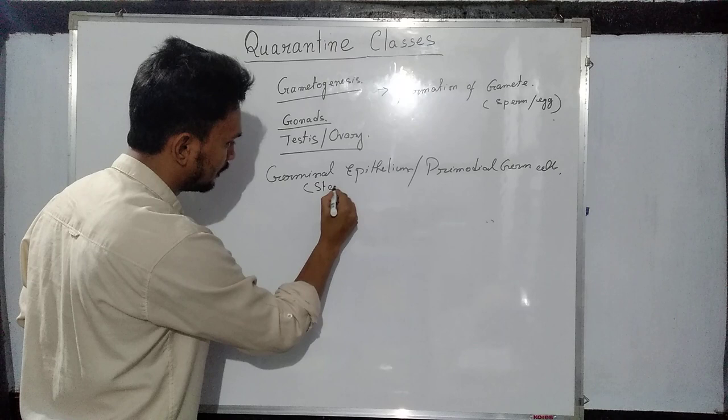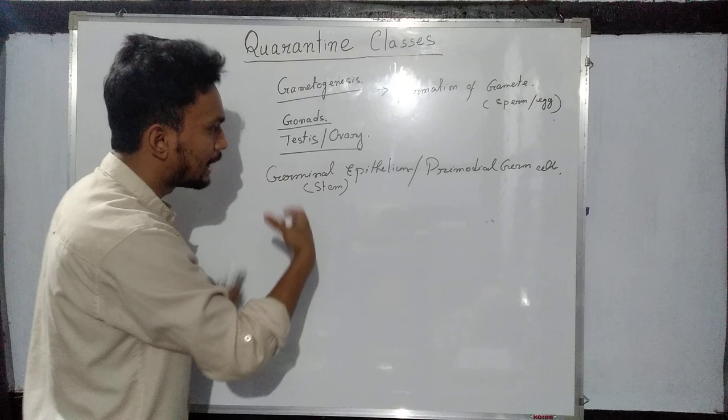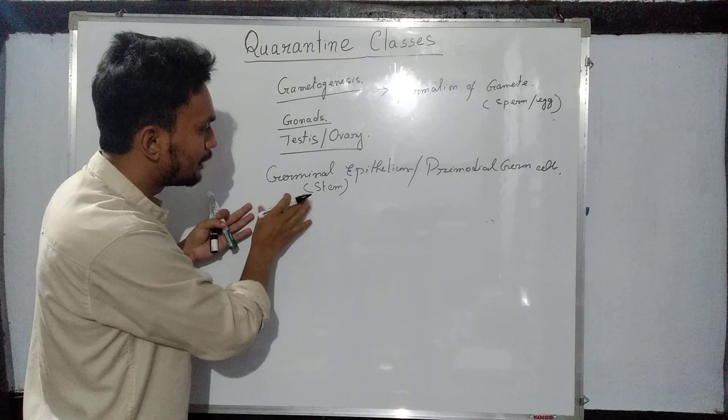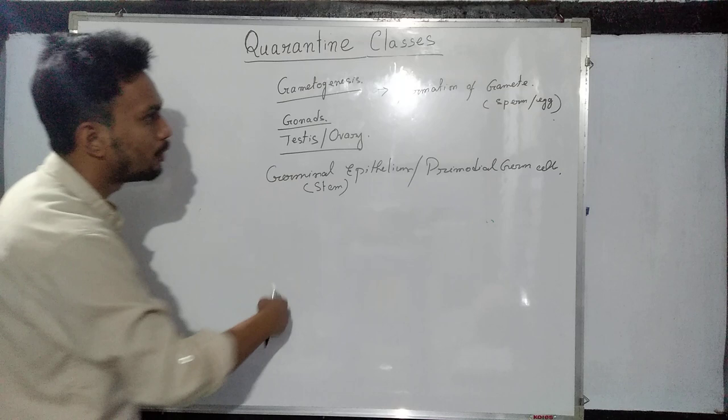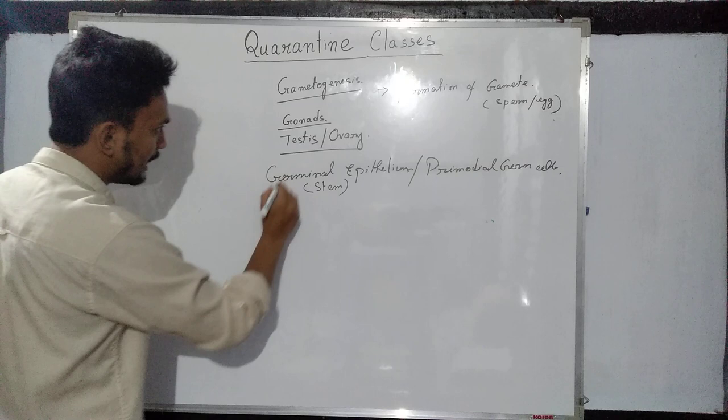These are also termed as primordial germ cells. Remember, these are a special kind of cells — they are a kind of stem cell. Stem cells are cells which have the capacity or potency to differentiate into other kinds of cells. So the germinal epithelium of the testis or ovary is a kind of stem cell that will divide and finally form sperm or egg.